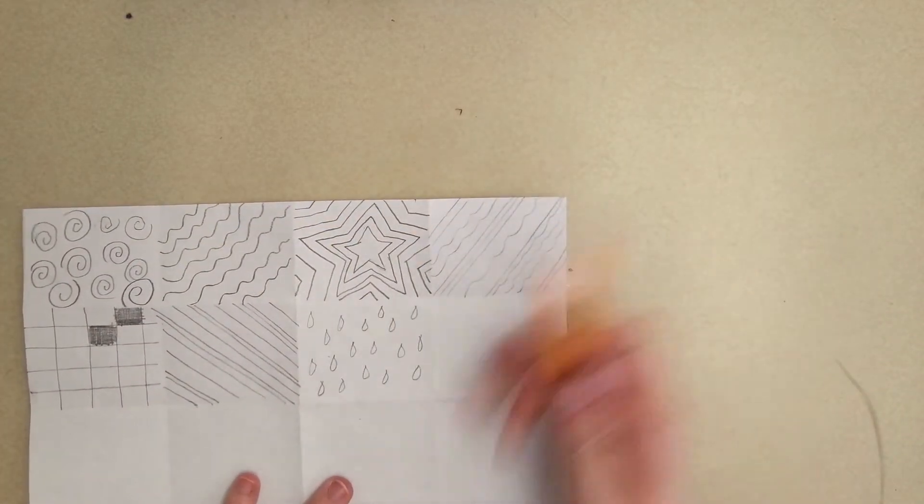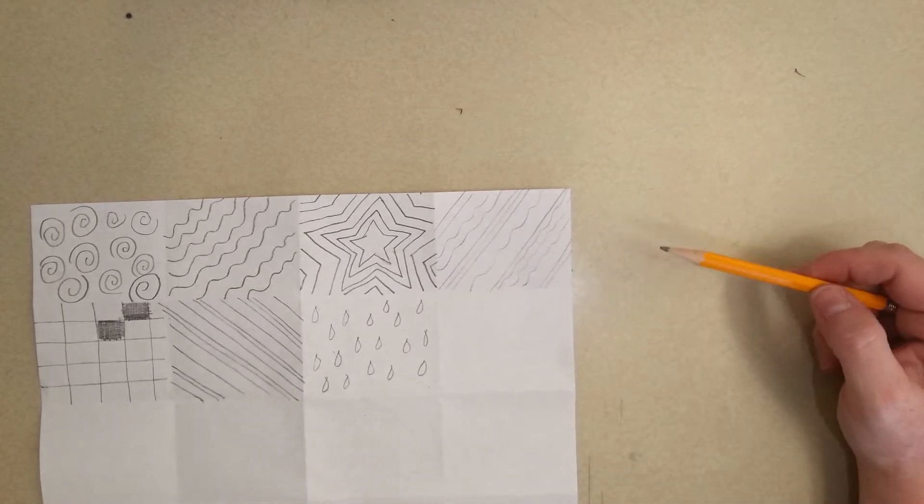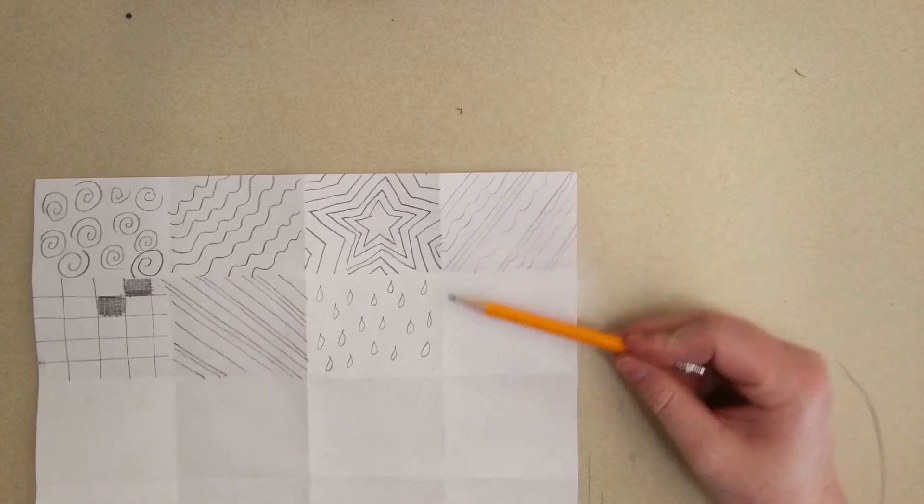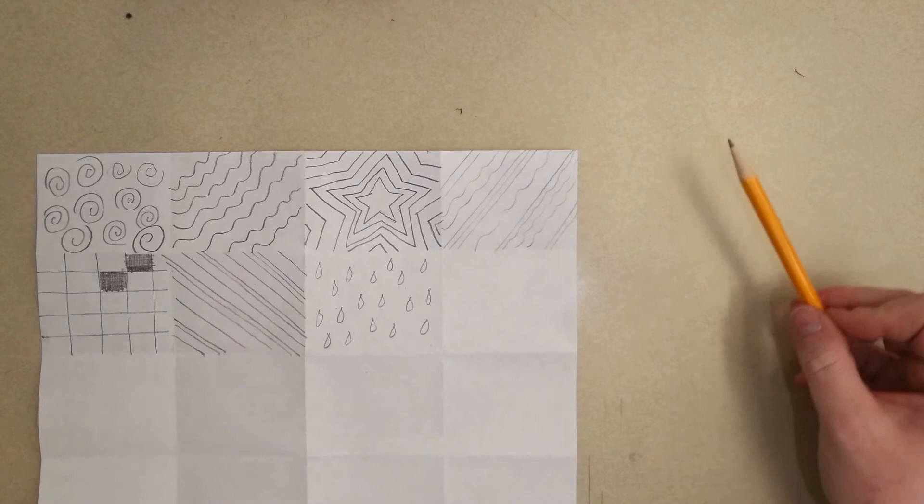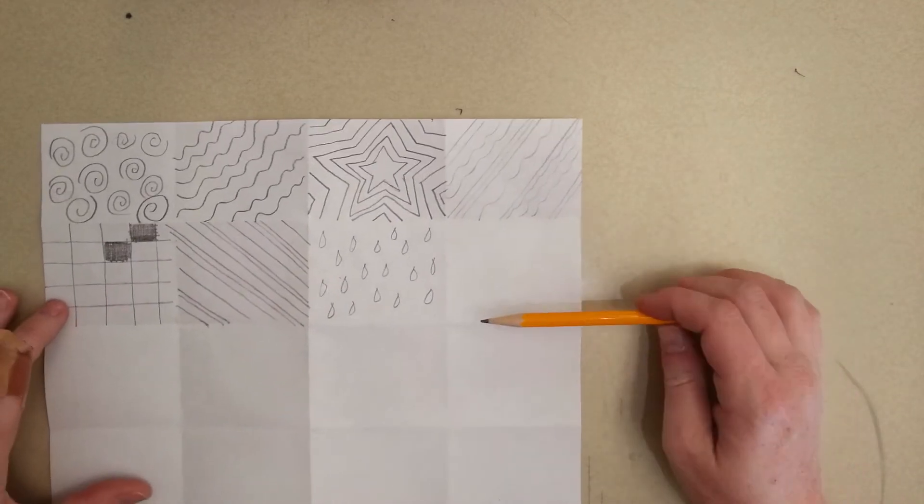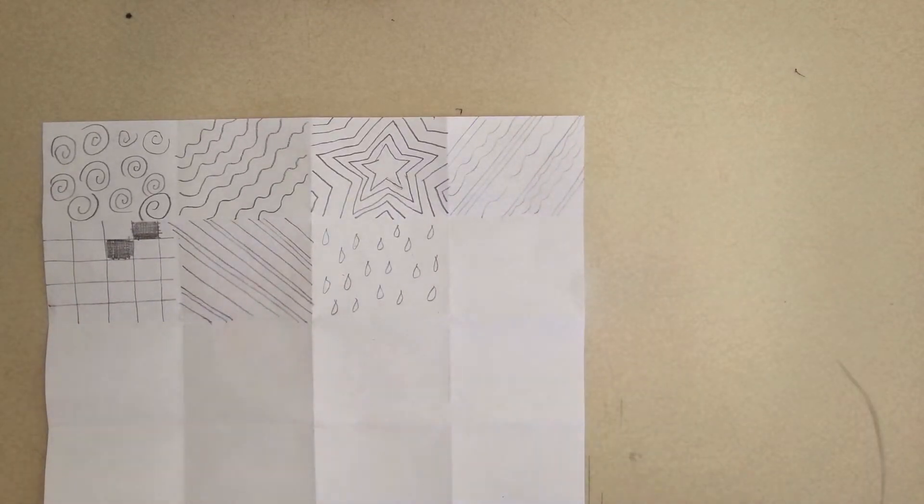Alright, so with each one you're going to come up with different ones. There's tons of different ways you can draw lines. So you need to fill this paper with those lines, and then put your name on the back and turn it into the folder.